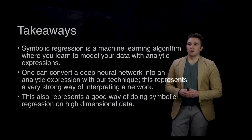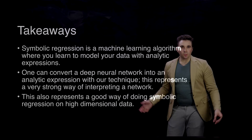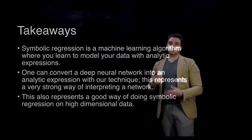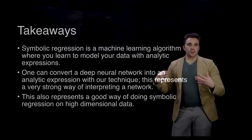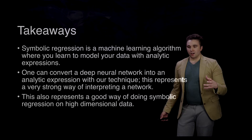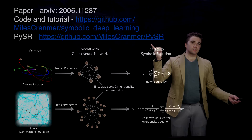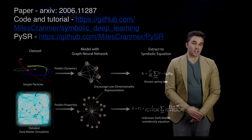The takeaways: symbolic regression is a machine learning algorithm where you model your data with analytic expressions — much more interpretable and potentially better at generalization for physics. You can always convert a deep neural network into an analytic expression with this technique, representing a very strong form of interpretation. This also provides a way to do symbolic regression on high-dimensional data where normal symbolic regression scales badly. Our code and a tutorial are online, and PySR, the symbolic regression package, is on GitHub.